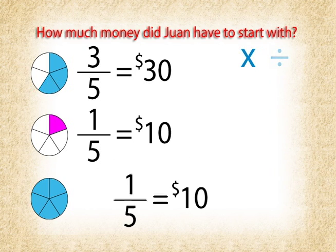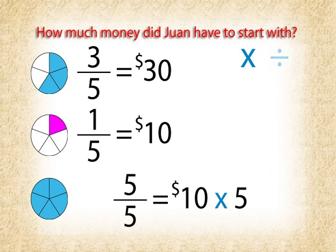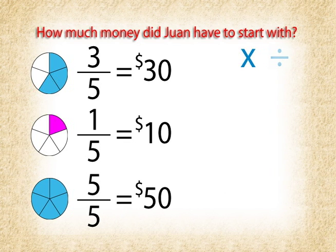Multiply by five. That's right again, Tex. We have to multiply both sides of the equation by five. So one-fifth times five is five-fifths, and then ten dollars times five is equal to fifty dollars. Fifty dollars is the amount he must have had at the beginning.